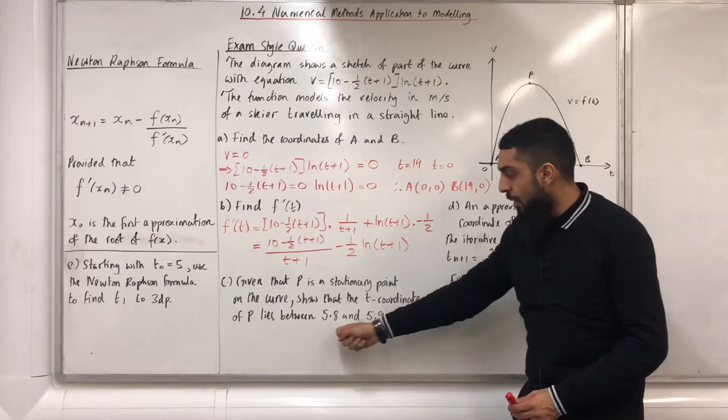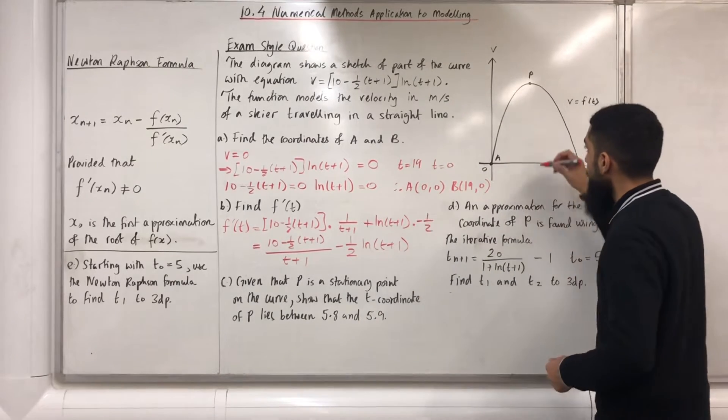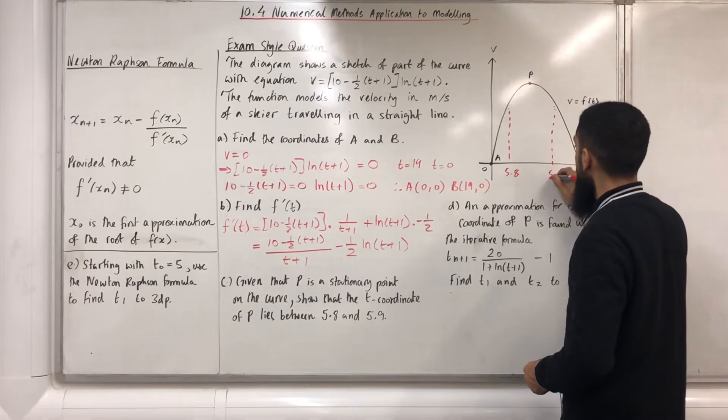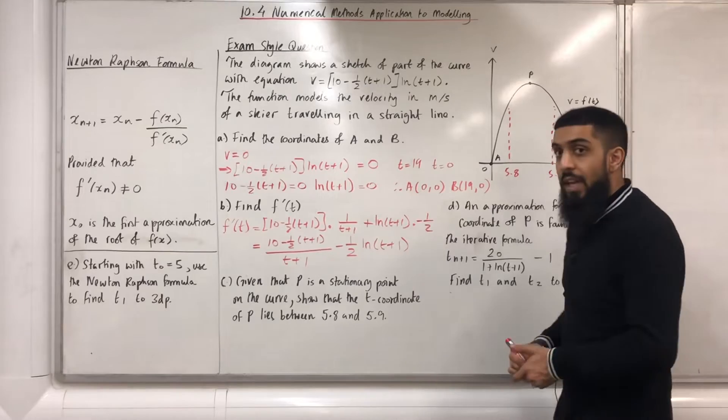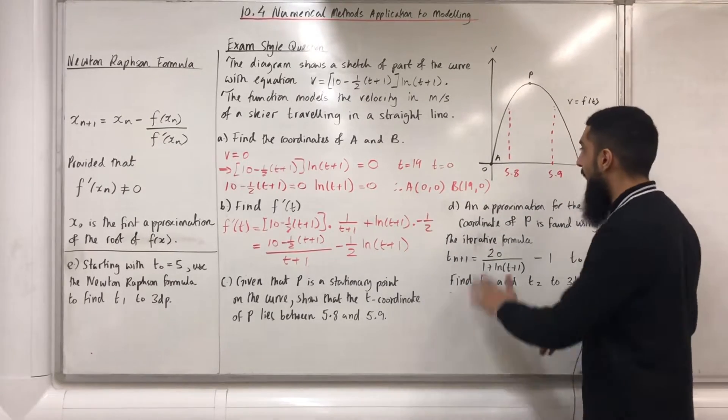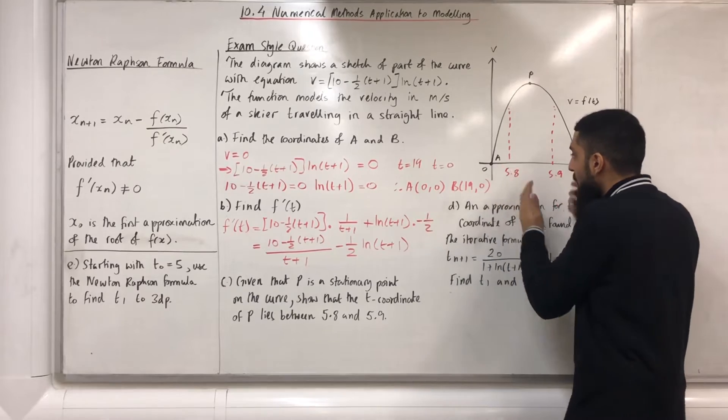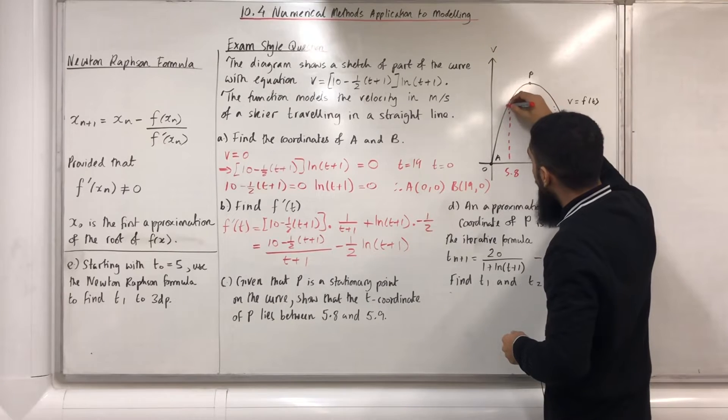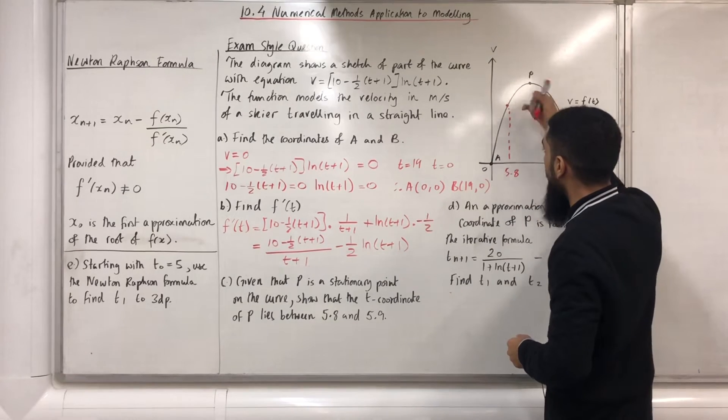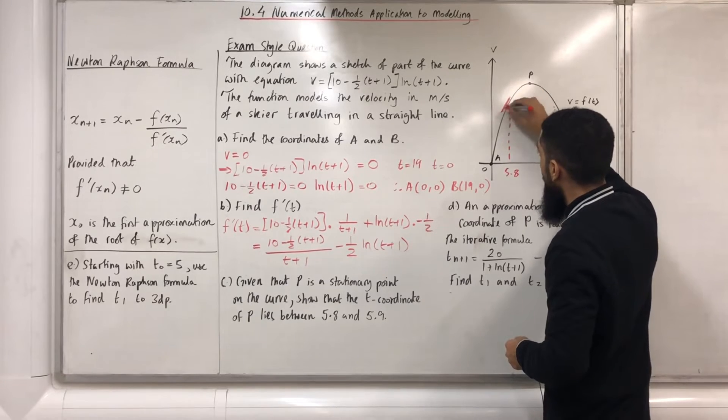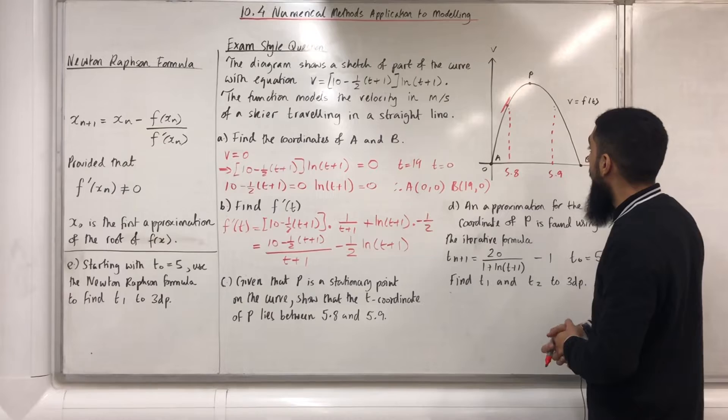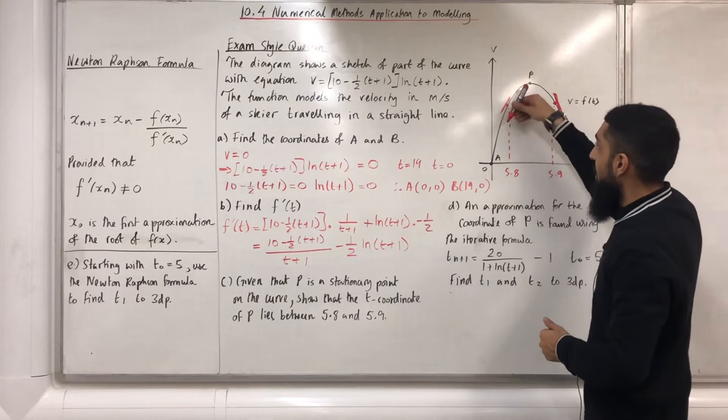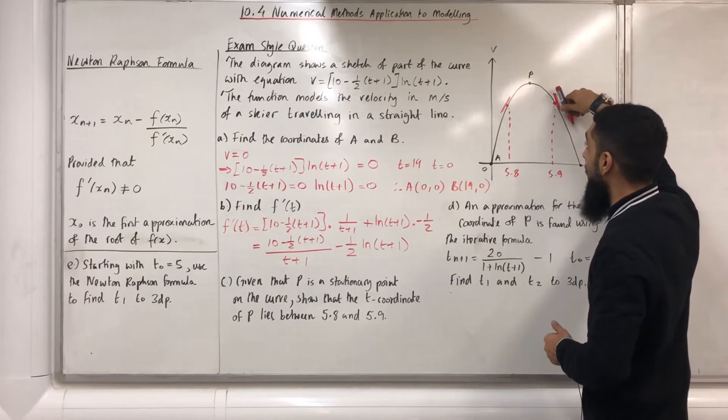Now, I'm going to label 5.8 and 5.9 on the graph. We know that the t coordinate of P lies between 5.8 and 5.9. How do we show that this is valid? Well, I'm going to draw a tangent to the curve at the point t = 5.8. Next, I'm going to draw a tangent to the curve at the point t = 5.9.